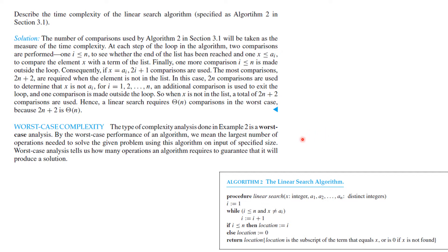Now, the type of complexity analysis we did here was worst case analysis. By worst case analysis of an algorithm, we mean the largest number of operations needed to solve the problem for any input of specified size. Worst case analysis tells us how many operations are required to guarantee it will produce a solution, or tell you there is no solution.